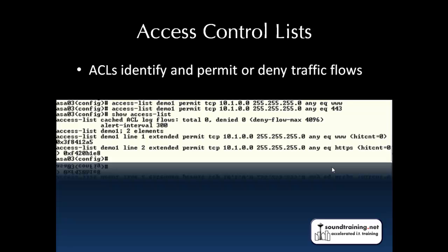When we do a show access-list, the output also includes line numbers. Each time you add a line to an ACL, it is appended to the end and numbered sequentially. Also, in a Cisco ASA security appliance, ACLs are assumed to be extended as opposed to standard. An extended list can filter on source and/or destination IP addresses, protocol types, and TCP or UDP port numbers. A standard list filters only on the source IP address.